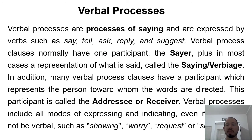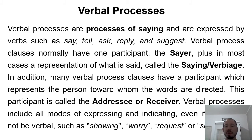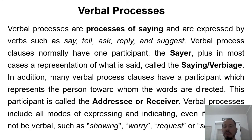Verbal processes are processes of saying and are expressed by verbs such as say, tell, ask, reply, and suggest. Verbal process clauses normally have one participant — the sayer — plus in most cases a representation of what is said, called 'verbiage.' I'm going to call it verbiage. In addition, many verbal process clauses have a participant representing the person toward whom the words are directed — called the addressee or receiver. I'm going to call it addressee.